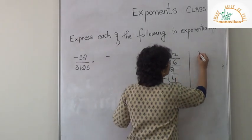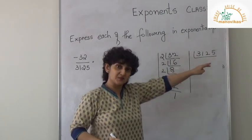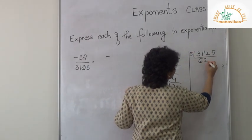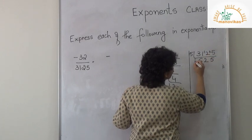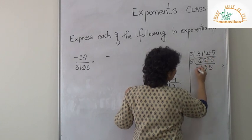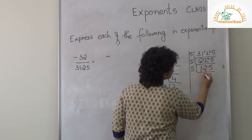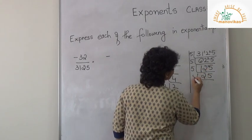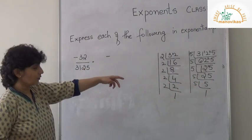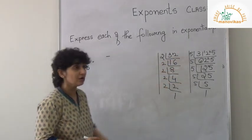Now let's try 3125. I can see a 5 in the units place, so let's divide by 5. Counting the fives: 1, 2, 3, 4, 5. So the exponential form is minus 2 upon 5, the whole to the power 5.